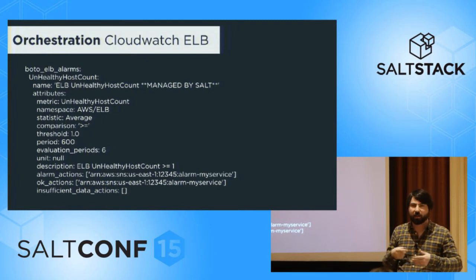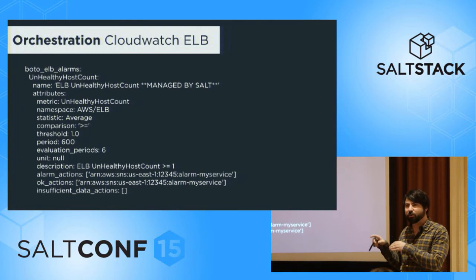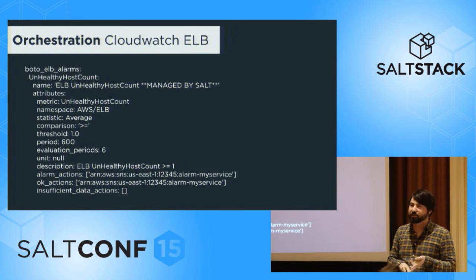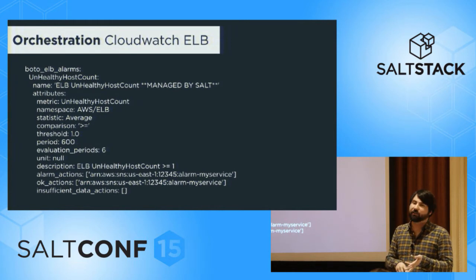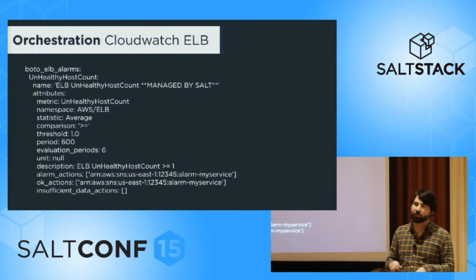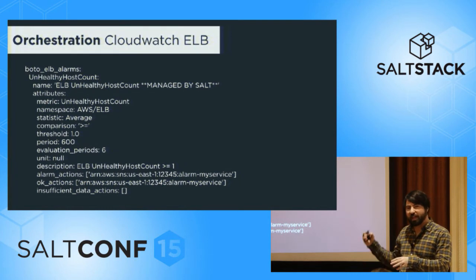Our motto as a DevOps team is that things should be easy to do correctly and hard to do incorrectly. So in general, if you create an ELB, you automatically get a set of CloudWatch alarms that check for unhealthy hosts, send alerts if your latency is too high as defined, if you have too many errors being sent from your application. And all of these get sent directly to developers. So if a developer creates a service, they are automatically on-call for that service and they get alarms that are preset for them.